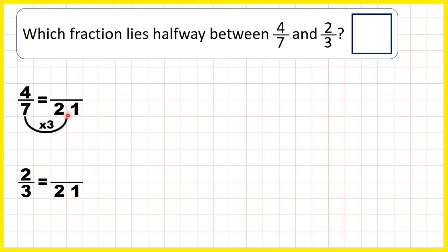Now 7 times 3 is 21, 4 times 3 is 12, 3 times 7 is 21, and 2 times 7 is 14.